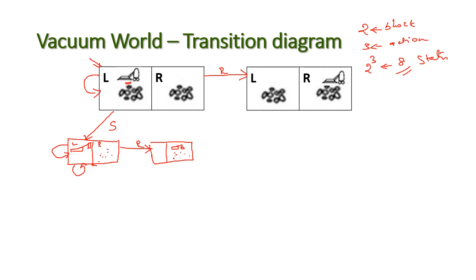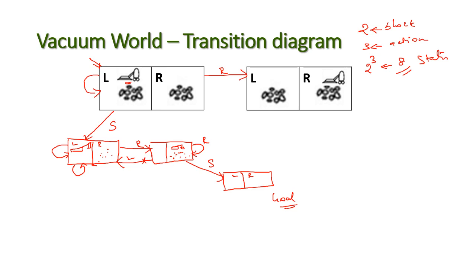Now, for the vacuum cleaner in the right-side state, it can perform the suck operation, move right, or move left. Moving left brings the cleaner back to the already-cleaned left side. The only meaningful operation is the suck operation. If we perform the suck operation, both locations — left and right — will be clean. This is our goal state. When we start from the initial state with the vacuum cleaner in the left direction, this path leads us to the goal.